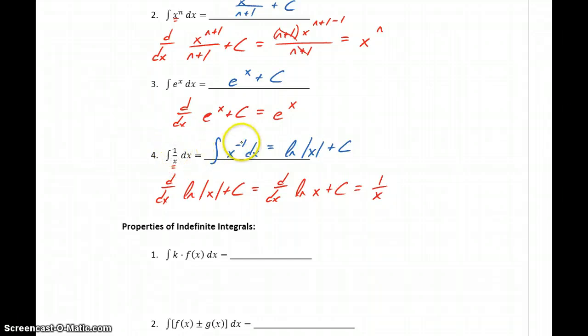So if we have 1 over x, or x to the negative first power, we just need to keep in mind that's going to be a natural log, and that we need those absolute value bars around the x.